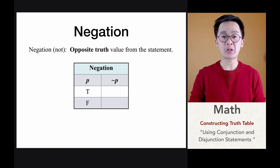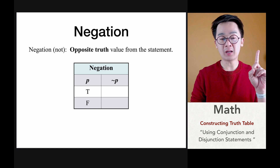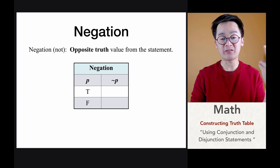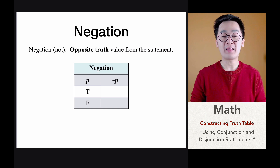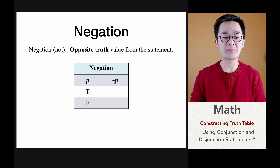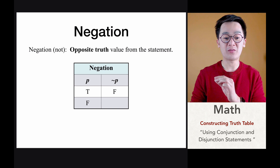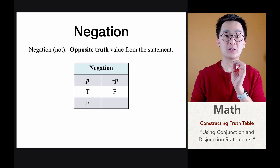In negation, if we're going to transform our negation value into a truth table, let's say we have a value of p. The value of p could be a true statement or a false statement, and if we're going to negate our statement p, that means we're just going to use the opposite truth of that particular statement. So if p is true, not p is false. If p is false, not p is true.